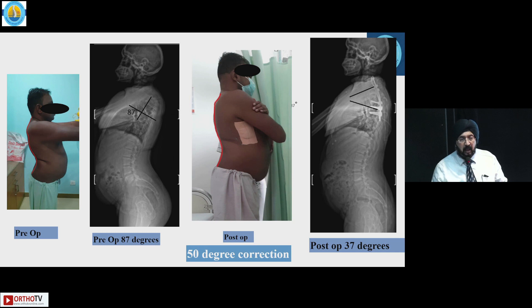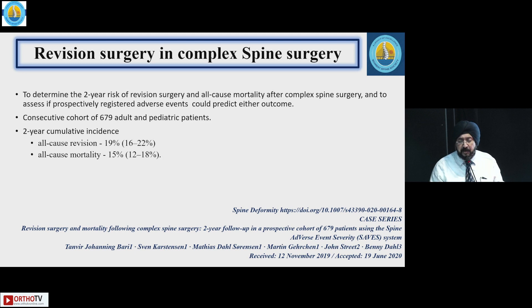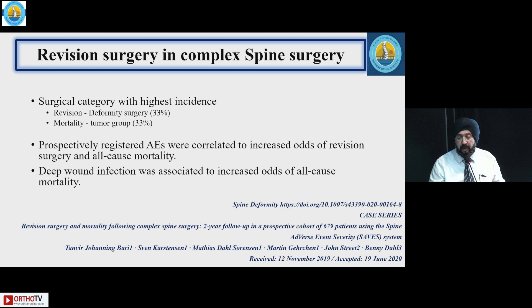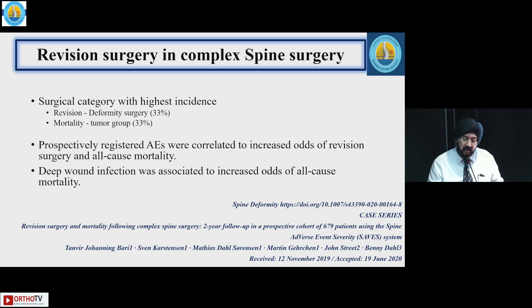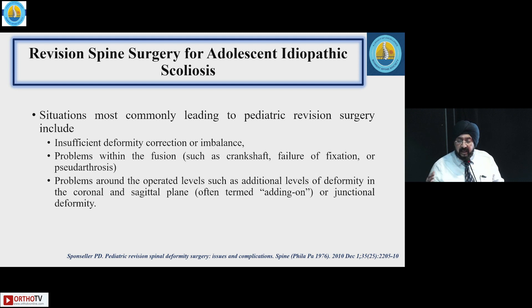In complex spine surgeries there is more mortality, morbidity, and revision. The revision rate ranges from 16 to 22% and mortality from 12 to 18% in such cases — tumors contributing more to mortality and deformity leading to more revisions. Prospectively registered adverse events were correlated with increased odds of revision surgery and all-cause mortality, and deep wound infection was associated with increased odds of all-cause mortality.